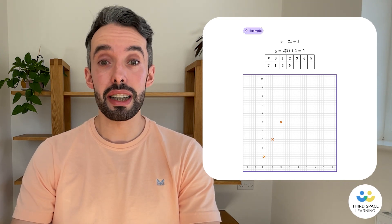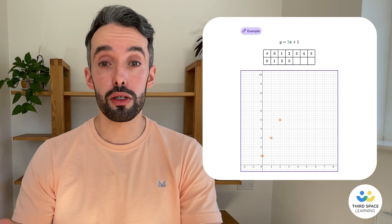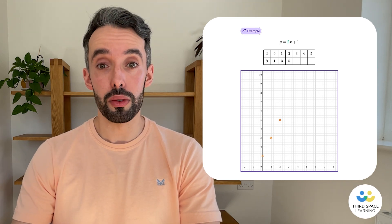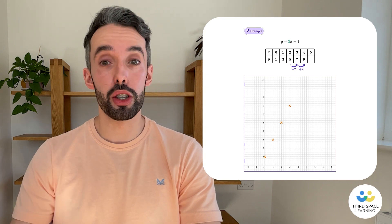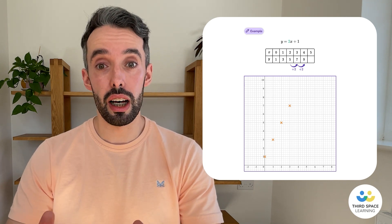But a really quick way to do this is to notice that the gradient is 2. So, all we have to do is add on 2 to the y values. And we can keep on doing that to work out our straight-line graph.